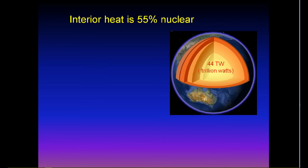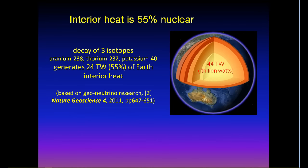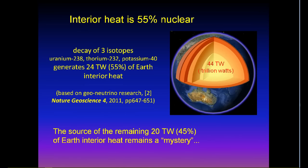The source of the interior heat is 55% nuclear. Decay of three isotopes of uranium, thorium and potassium generates 24 trillion watt, or 55% of the interior heat. The source of the remaining 20 trillion watt remains a mystery.